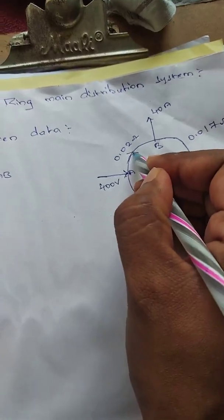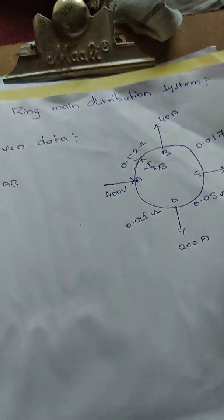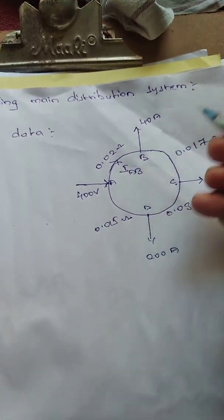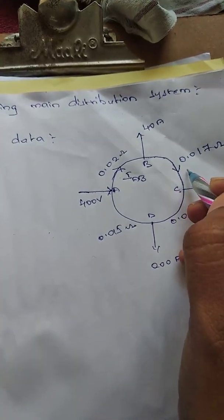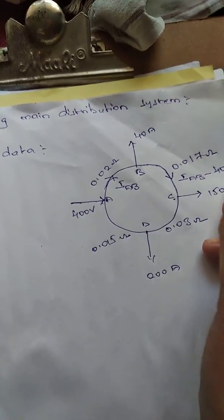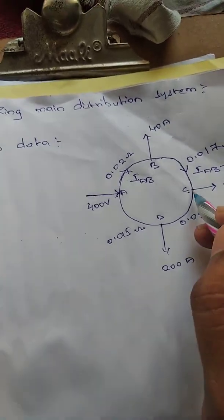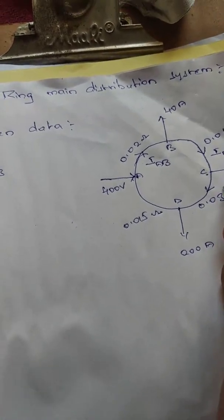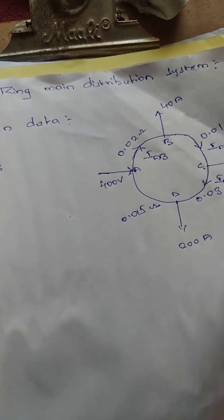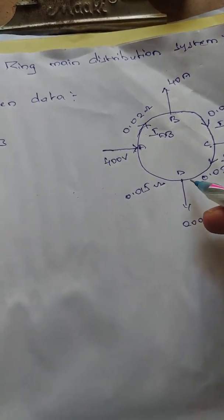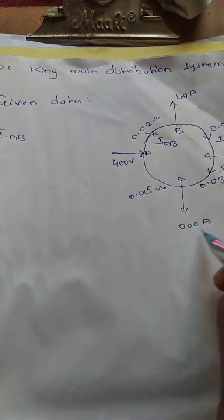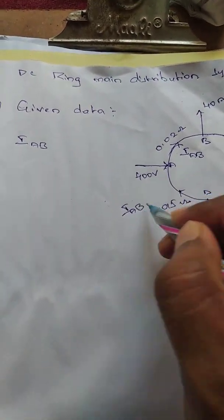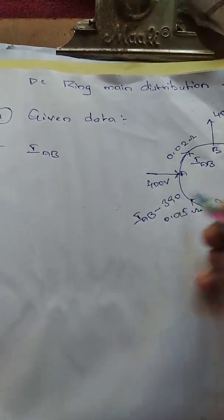IAB is the current flowing through section AB. From B point, the outgoing current is 40 amps, so the current from here is IAB minus 40. At C point, the outgoing current is 150 amps, so the current will be IAB minus 190. The current flowing outwards at D is 200 amps, so the current in section DA will be IAB minus 390.